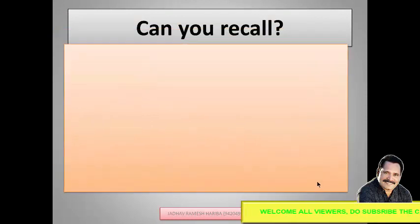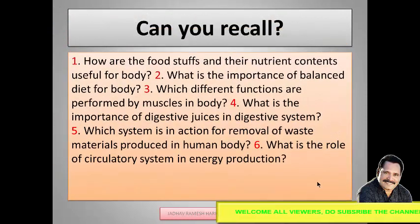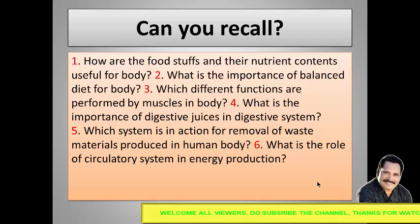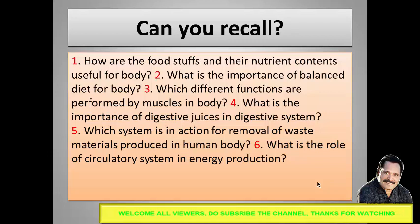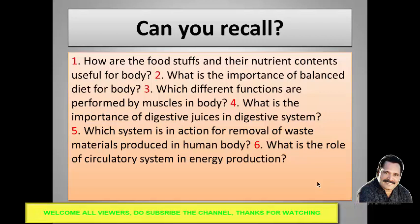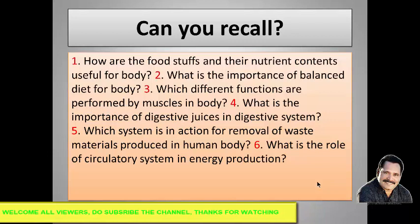We have studied various life processes in the previous standard — just recall them. What are the foodstuffs and their nutrient content which are useful for our body? We eat various food materials like fruits, vegetables, chapati, roti, and rice. These contain various nutrients helpful for our body: carbohydrates, proteins, fats, minerals, and vitamins.